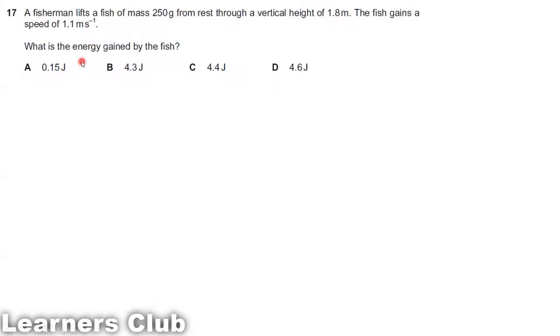Question 17. A fisherman lifts a fish of mass 250 grams from rest through a vertical height of 1.8 meters. The fish gains a speed of 1.1 meters per second. He is lifting a fish through a vertical height of 1.8 meters, which means there is a gain in potential energy. And also gains a speed, which means there is a gain in kinetic energy. What is the energy gained by the fish? We have to consider both potential energy as well as kinetic energy.